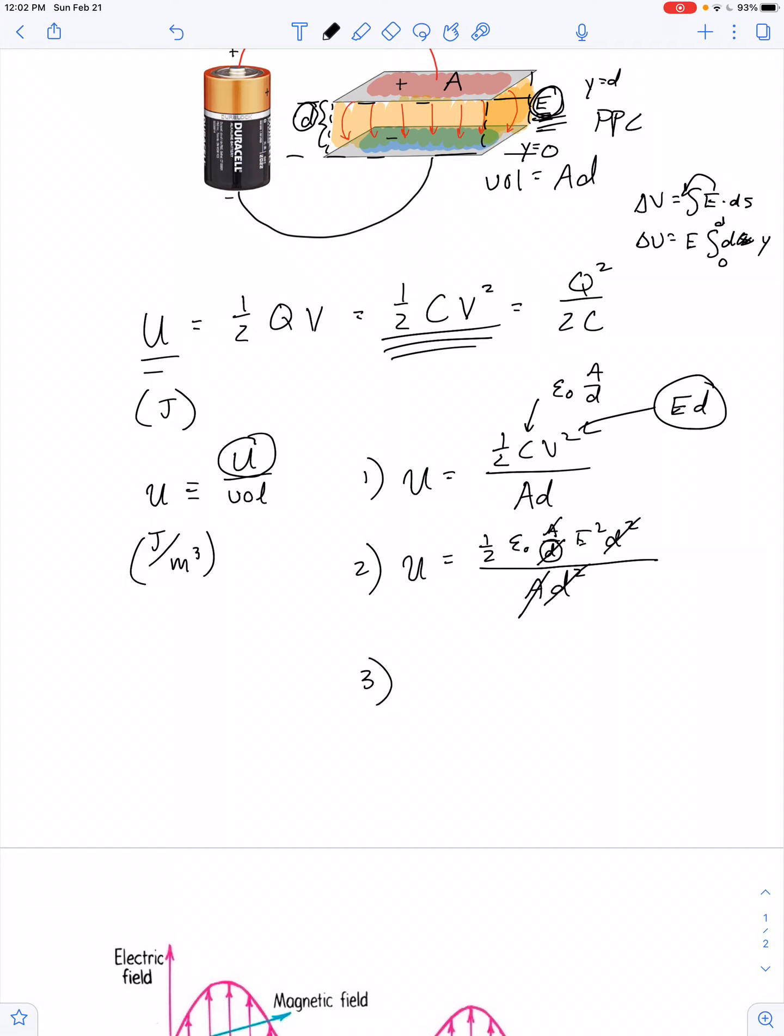So we actually get a pretty simple expression for the energy density of the electric field in a parallel plate capacitor. The energy density is equal to one-half times the permittivity of free space times the electric field strength squared. And that's actually not just the energy density for the electric field in a parallel plate capacitor. That's actually the energy density for any electric field.